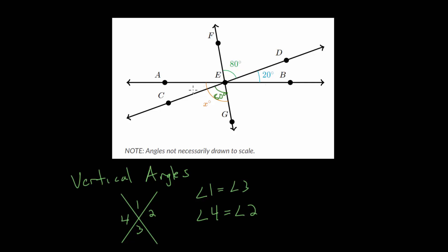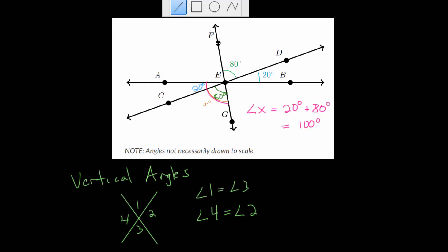Likewise, angle DEB has a vertical angle — just imagine the lines continuing and look straight across. Angle AEC is a vertical angle to angle DEB, so that means it's also 20 degrees. So angle x is the sum of both angles: angle x equals 20 degrees plus 80 degrees, which is 100 degrees.